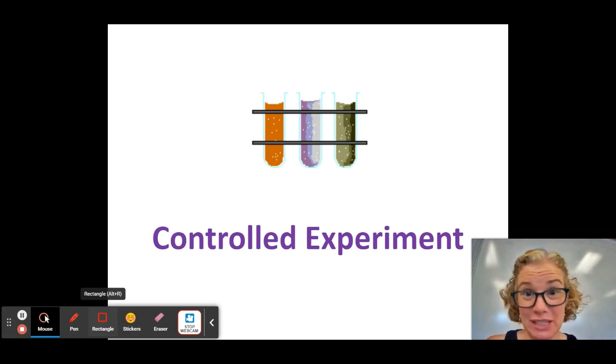So we're going to be talking about a controlled experiment. A controlled experiment is one in which we only have one thing that the scientist is purposely changing. Everything else we try to keep the same and the reason we do that is we can tell if that one thing I'm changing is making a difference.